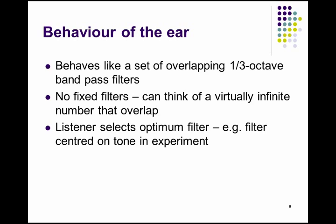Our ear — simplified summary — behaves like a set of overlapping one-third octave bandpass filters. But it's not a fixed bandwidth at 2K and a fixed bandwidth at 4K; there are as many bandwidths as we have hair cells — a few thousand. Every time you listen to something, you choose the filter that is optimally set to the frequency you're concentrating on. That doesn't mean they're not overlapping, but you can concentrate on one specific filter.